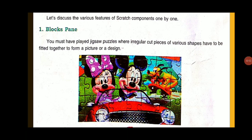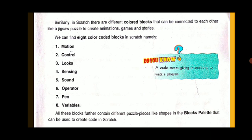Let's discuss the various features of Scratch components one by one. The first one is the Block Palette. You must have played jigsaw puzzles where irregular cut pieces of various shapes have to be fitted together to form a picture or design. Similarly in Scratch, there are different colored blocks that can be connected to each other like jigsaw puzzles to create animations, games, and stories. We can find eight color-coded blocks in Scratch, namely: Motion, Control, Looks, Sensing, Sound, Operators, Pen, and Variables.